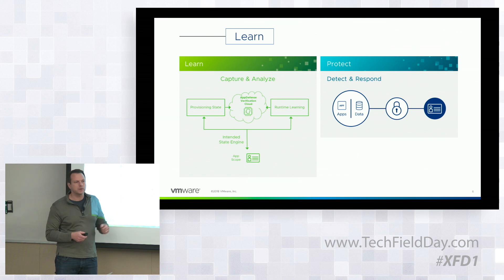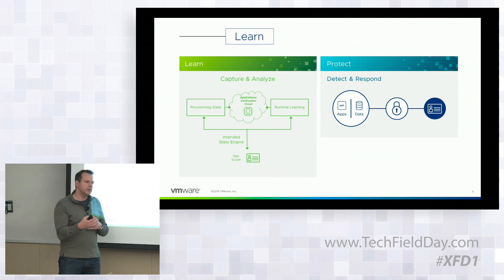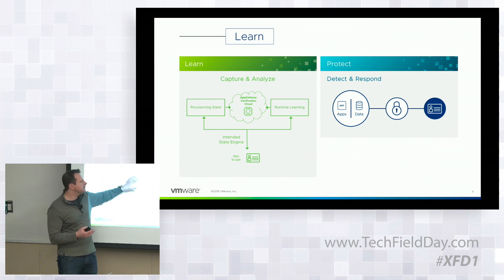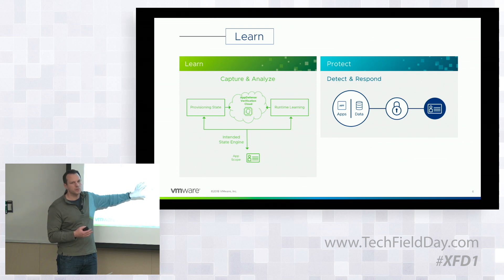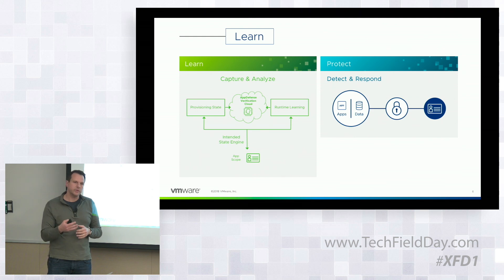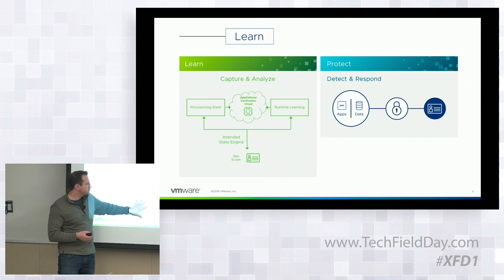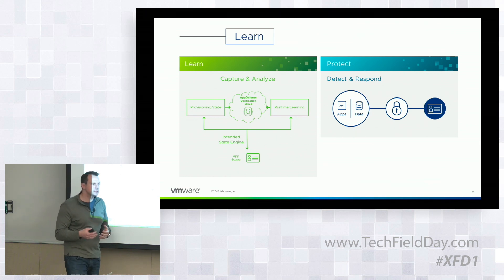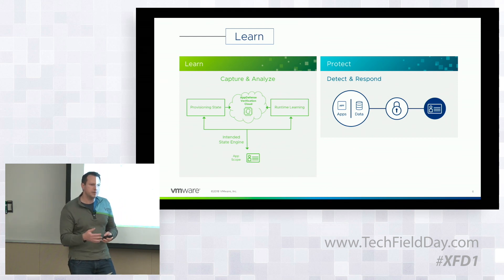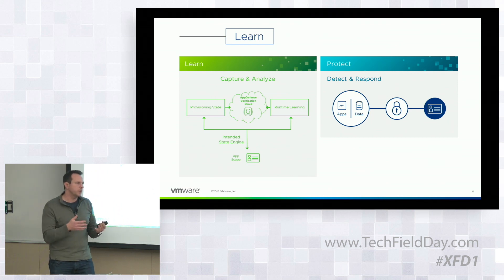That verification step is important because you want to provide as much automation as possible in the learning phase — you don't want people having to build and create manual policies themselves. As part of the verification process, you need something helping you along the way because these rules get way too granular and esoteric for a human to go through all of them. Given that we can verify 90 to 95% of behaviors on a machine, your humans only have to look at the last 5% to verify those things. That spits out something called an application scope — the governing rule set for what we expect to happen on that machine.